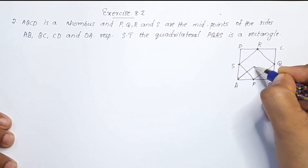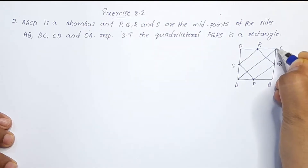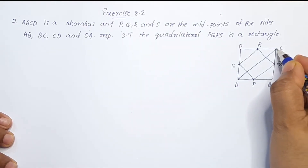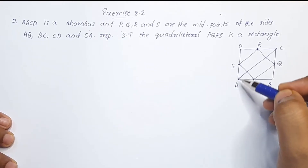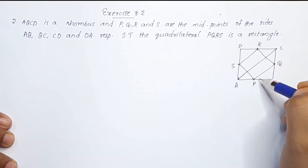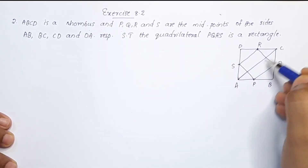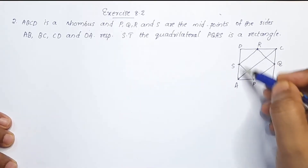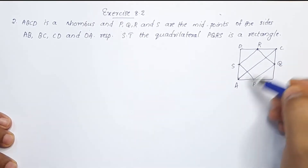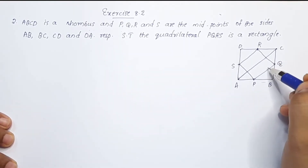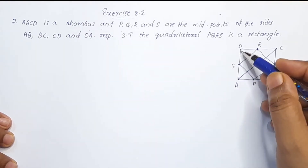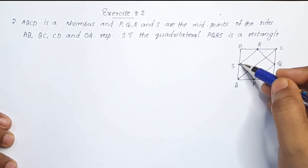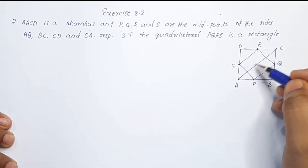The midpoint is here as a diagonal. The midpoint is here. This is ABCD, the rhombus, with a diagonal. ADC and ABC are two triangles. This is the triangle of the midpoints.